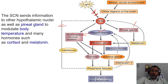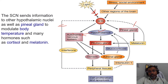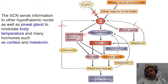The suprachiasmatic nucleus sends information to other hypothalamic nuclei as well as to the pineal gland, to maintain body temperature and regulate the secretion of many hormones. We know the pineal gland also secretes melatonin.